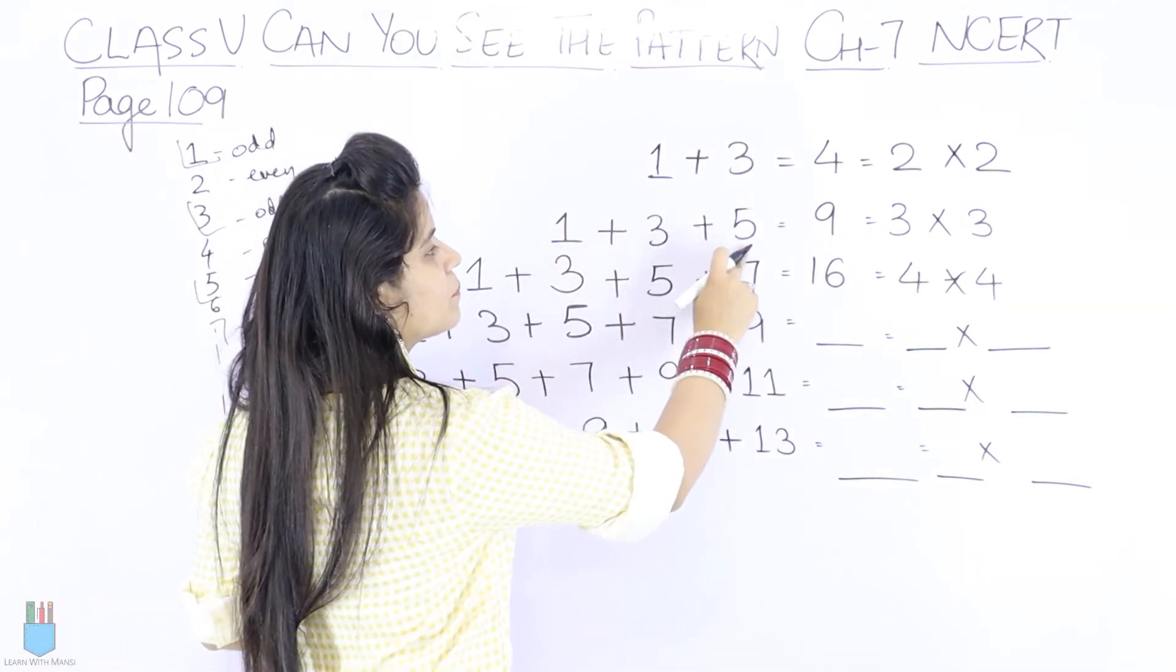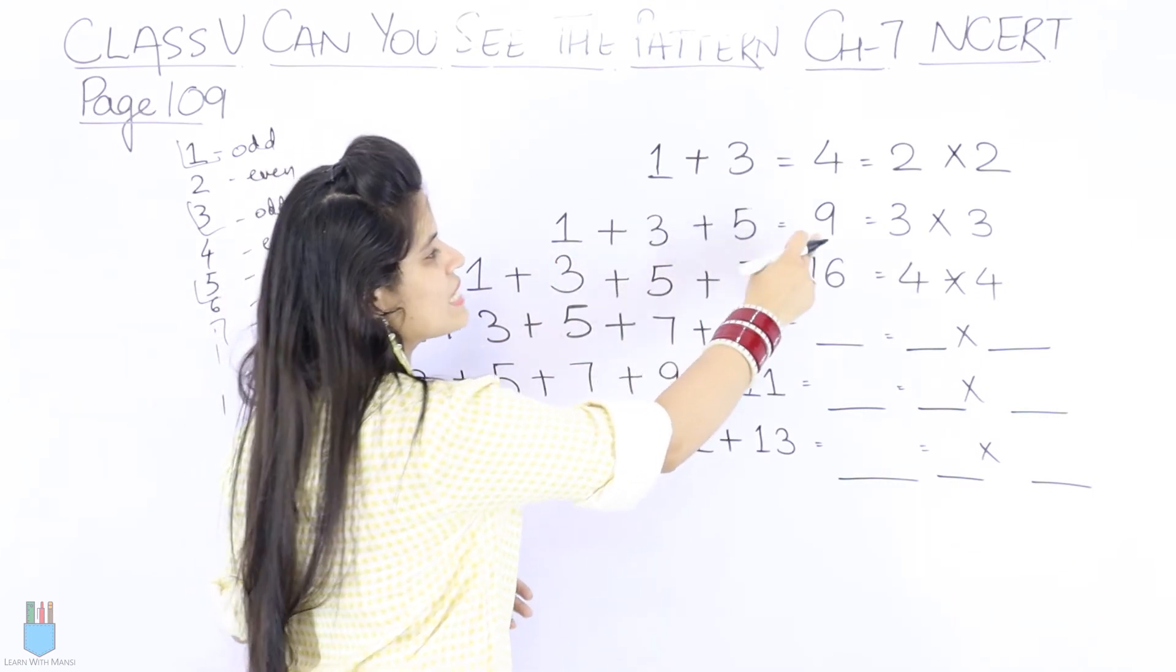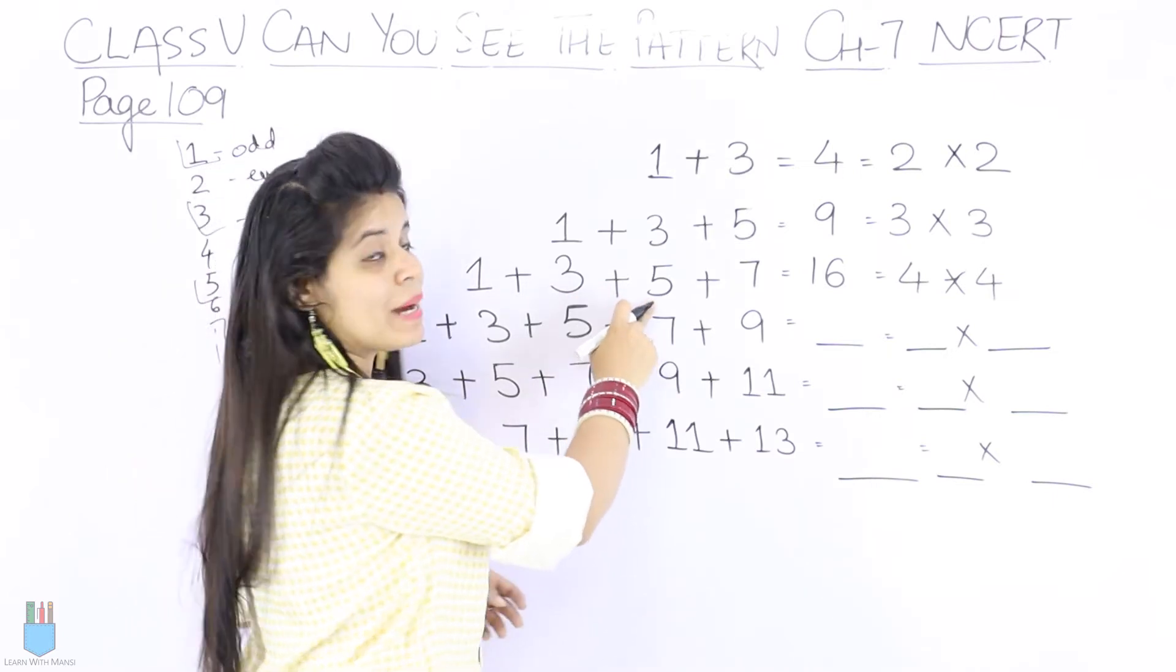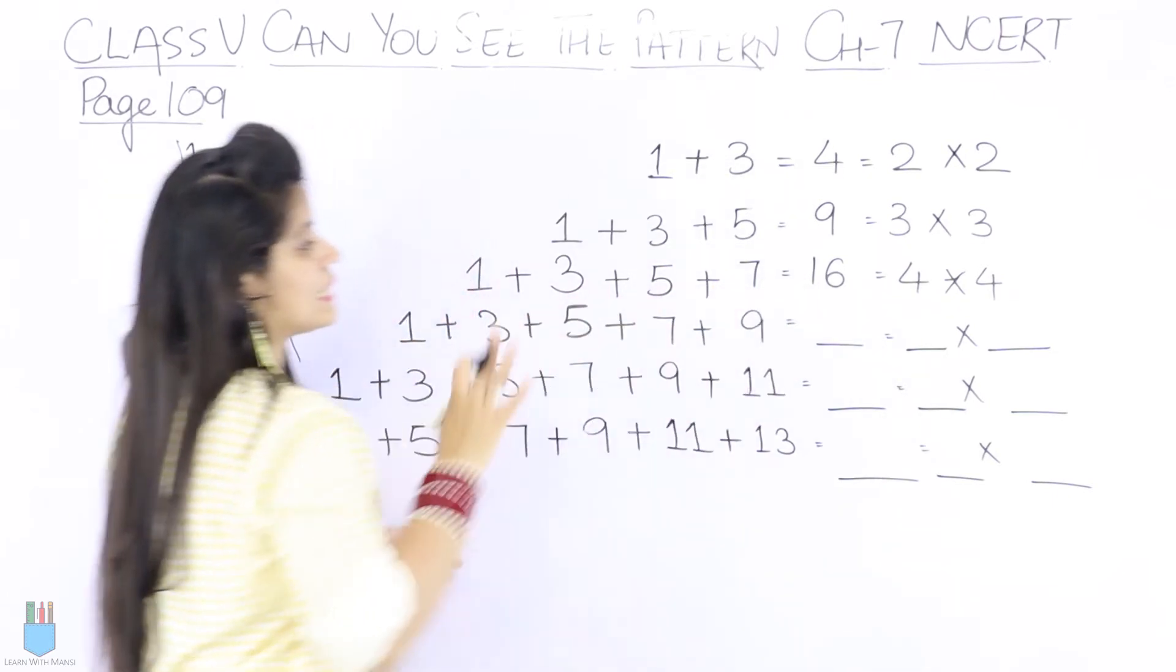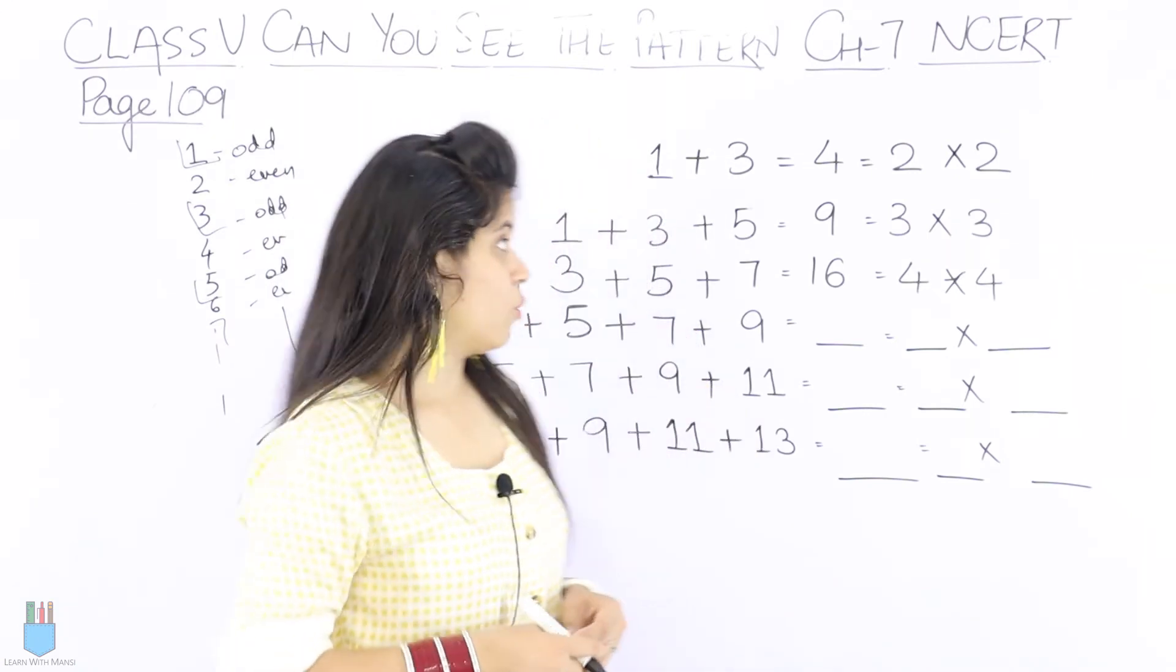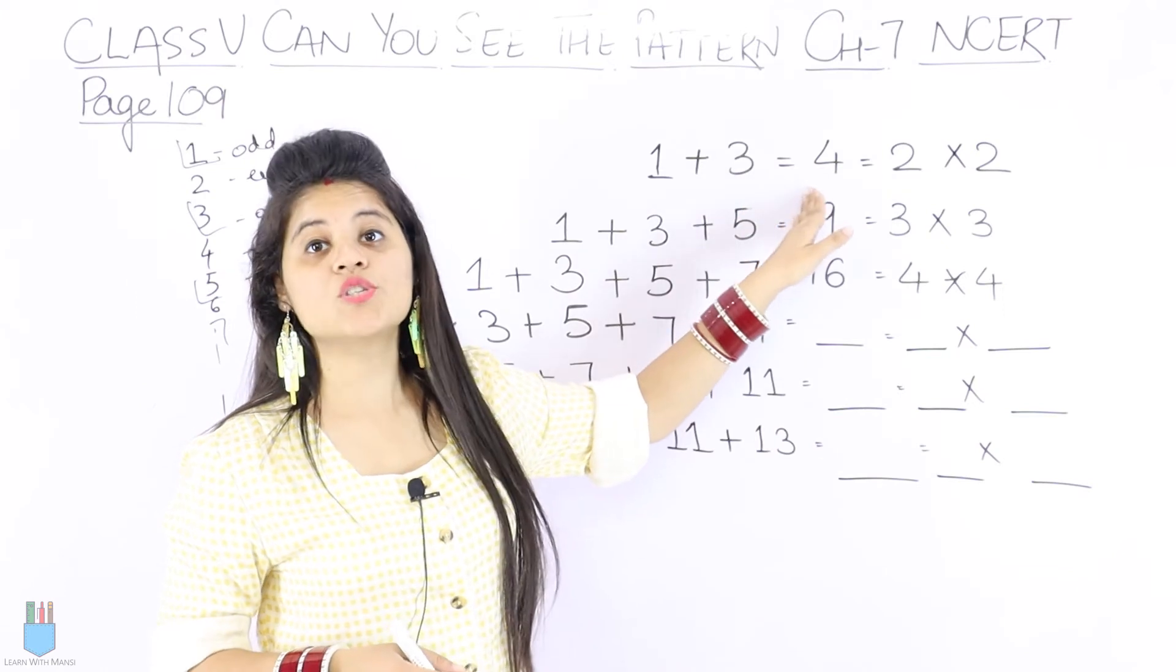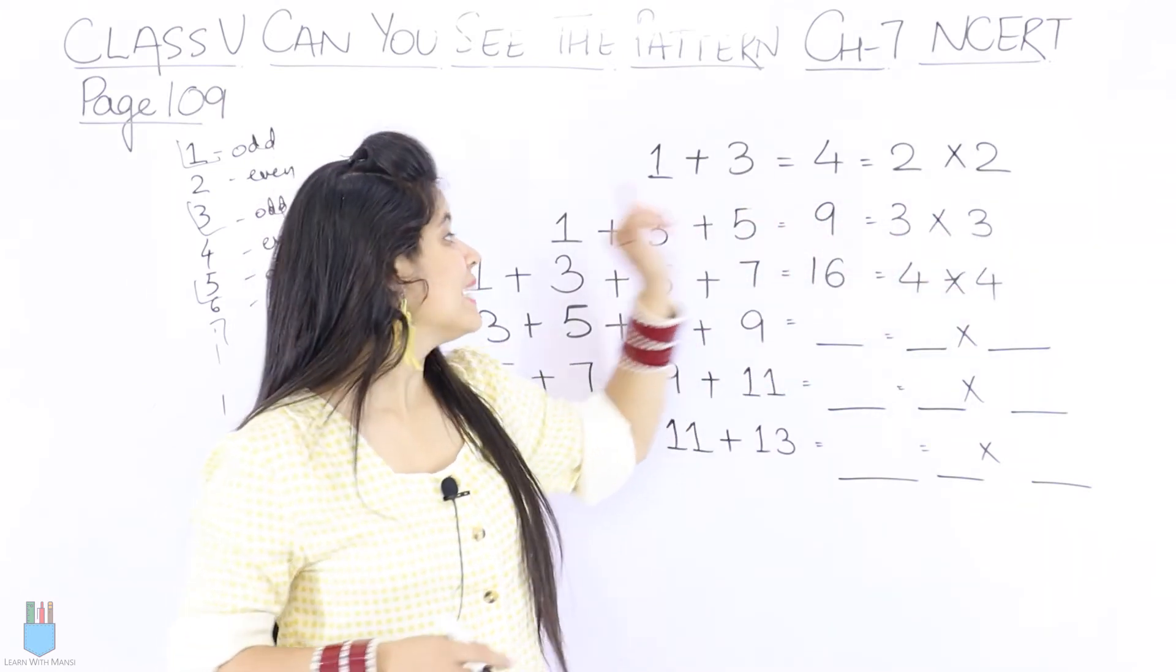Let's add 1 plus 3 equals 4. Next odd number is 5. So 1 plus 3 plus 5 is 9. Similarly, 1, 3, 5, next odd number is 7. So we get 16. Now we have to observe the pattern here. If you will see, 1 plus 3 equals 4, and 4 is 2 into 2.